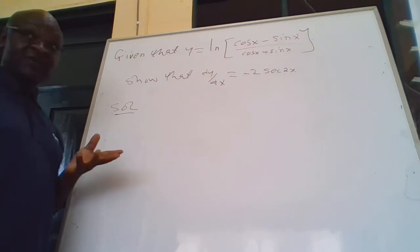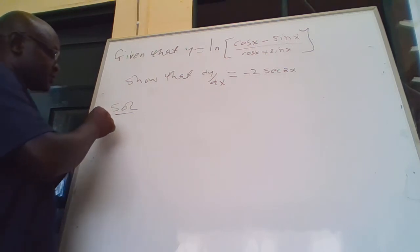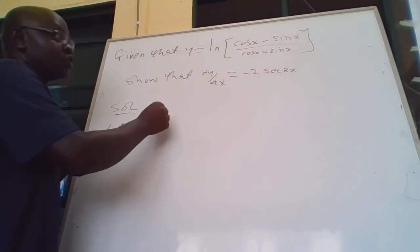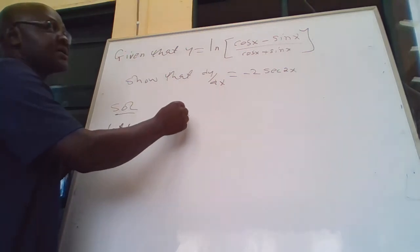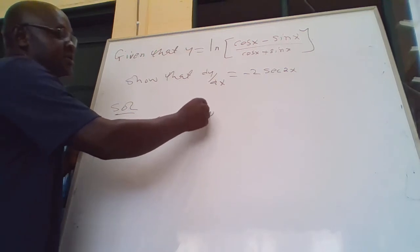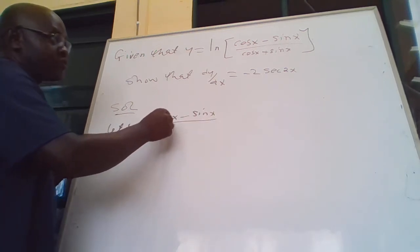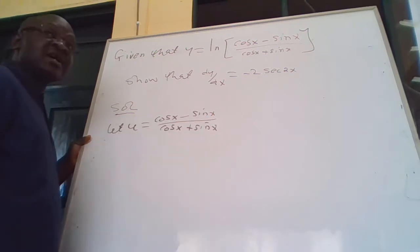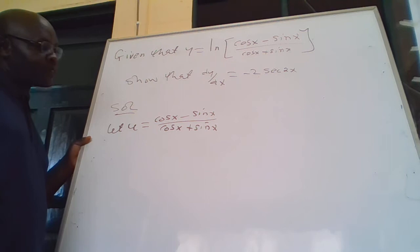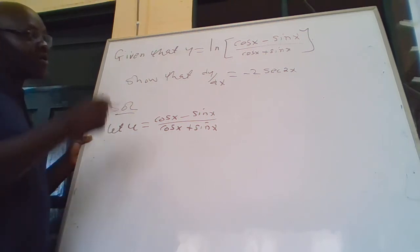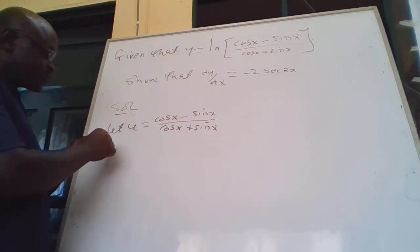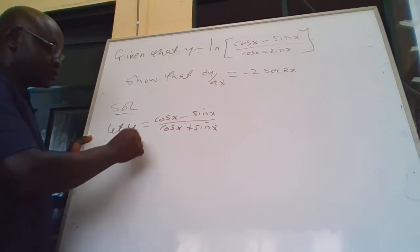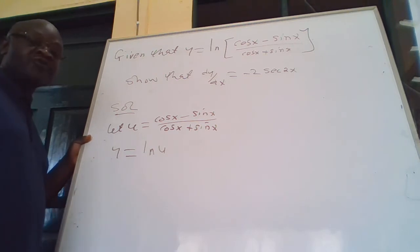Now we shall, first of all, let u equal to (cos x minus sin x) over (cos x plus sin x). Once we do that, our equation then becomes y equal to ln of u.